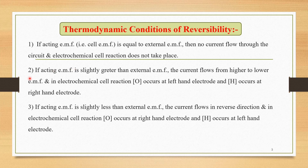The second important condition is: if the acting EMF is slightly greater than the external EMF, the current flows from higher to lower EMF, and in the electrochemical cell reaction, oxidation occurs at the left-hand electrode and reduction occurs at the right-hand electrode.